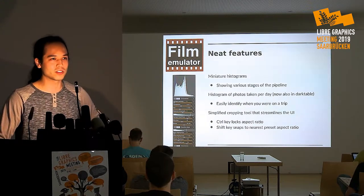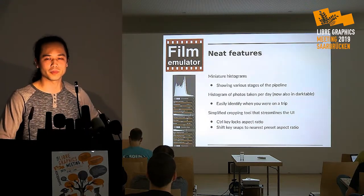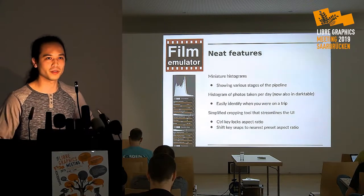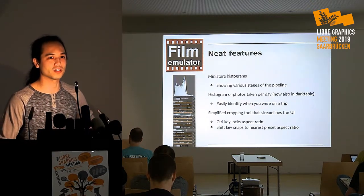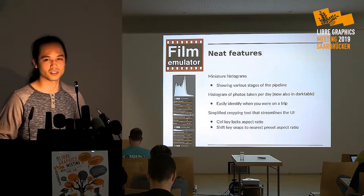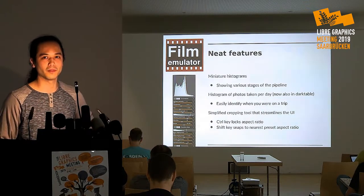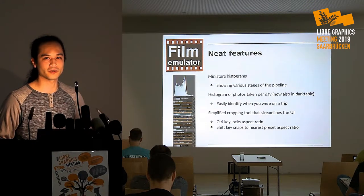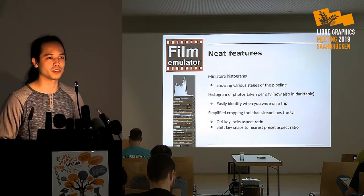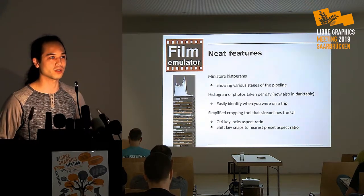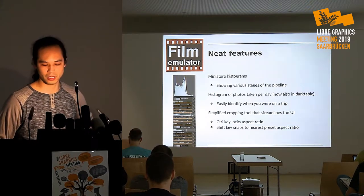I also put a lot of effort into a very nice cropping tool in Filmulator. You only press one button and it enables you to choose aspect ratios as you wish — it's super polished. You hold Control to lock the aspect ratio, and you can press Shift to snap to preset aspect ratios, and it'll choose the nearest one and size accordingly.